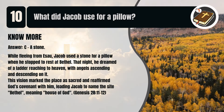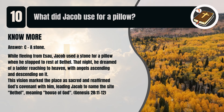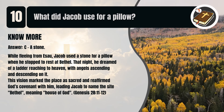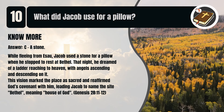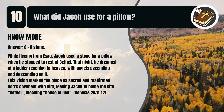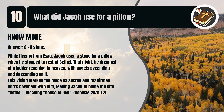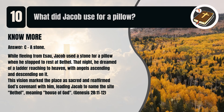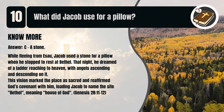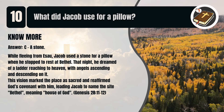That's C. A stone. While fleeing from Esau, Jacob used a stone for a pillow when he stopped to rest at Bethel. That night, he dreamed of a ladder reaching to heaven, with angels ascending and descending on it. This vision marked the place as sacred and reaffirmed God's covenant with him, leading Jacob to name the site Bethel, meaning House of God. Genesis chapter 28 verses 11 to 12.